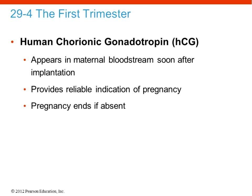The first hormone is HCG, or human chorionic gonadotropin, which appears in the maternal bloodstream soon after implantation. Once the developing pre-embryo has implanted into the uterine wall, we start to see HCG released in the bloodstream. This is a very reliable indication of pregnancy because this hormone is only released once implantation has occurred in the uterine wall. If there's no HCG, pregnancy is not going to happen. This is what women use when doing pregnancy tests — it can be detected in the blood and in the urine, making it a reliable indicator of pregnancy.